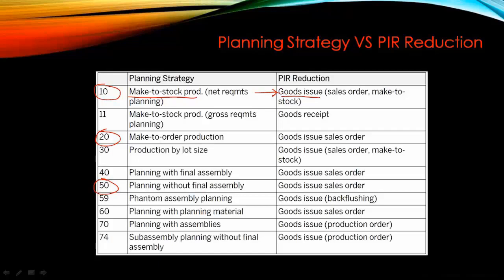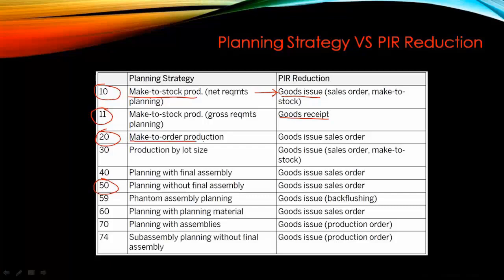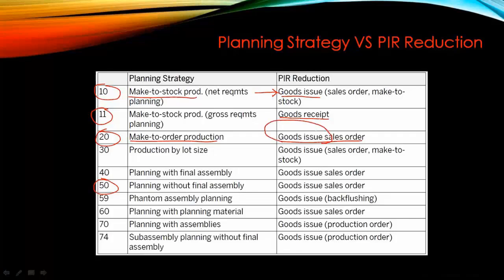When I say goods issue, that means goods issue for the sales order. So when goods issue happens, then only the PIR will be reduced. For example, if I entered in MD61 a PIR of 100 pieces for next month and 500 for the following month, the more goods issues you do, the more the PIR is reduced. For planning strategy 11, the PIR is reduced on goods receipt, and for strategy 20 — make-to-order production — the PIR is also reduced on goods issue, same as strategy 10.